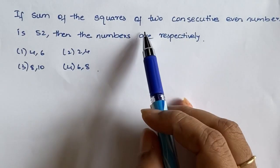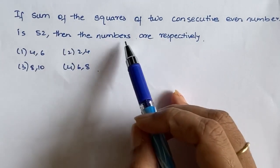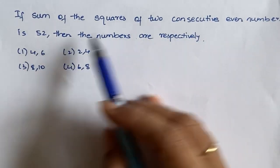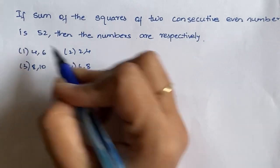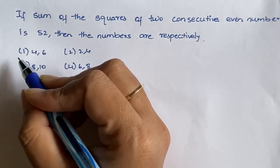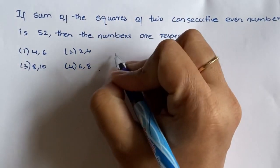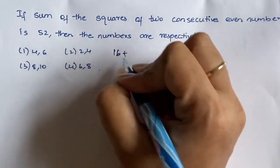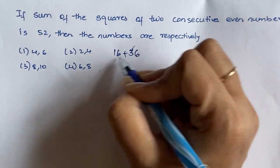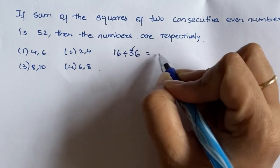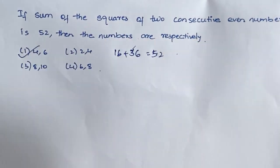If the sum of squares of 2 consecutive even numbers is 52, then the numbers are respectively. We use the option verification method: 4 squared is 16, 6 squared is 36, and 36 plus 16 equals 52. We get 52, so the first option is the correct answer.